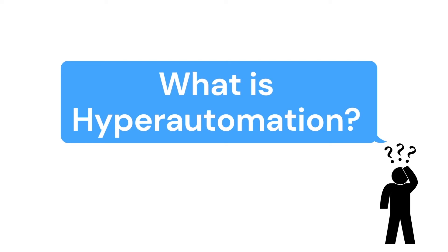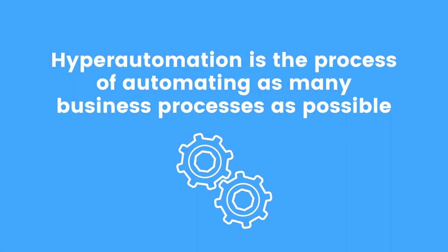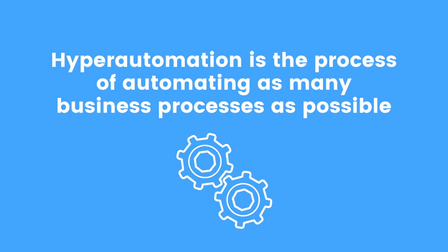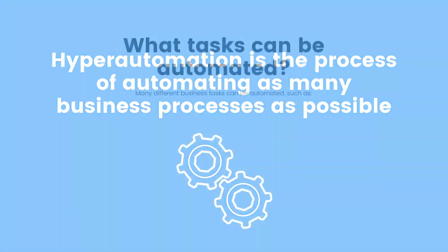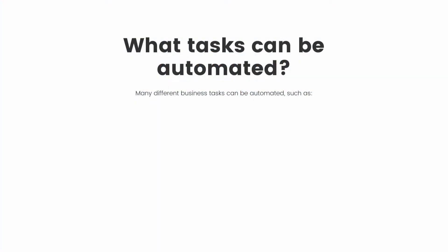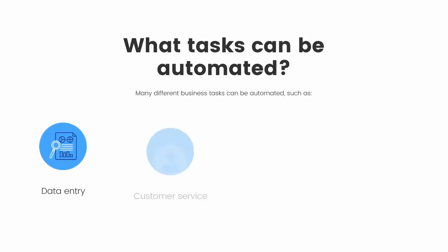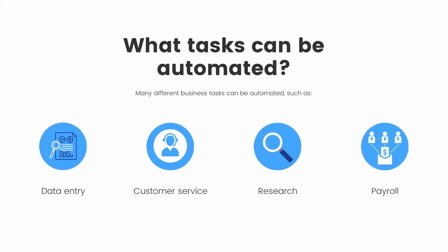What is hyper-automation? Hyper-automation is the process of automating as many business processes as possible. But what tasks can be automated? There are many different business tasks that can be automated, such as data entry, customer service, research, and payroll.